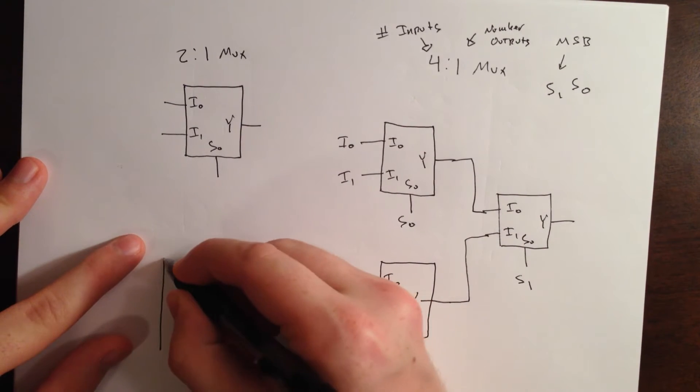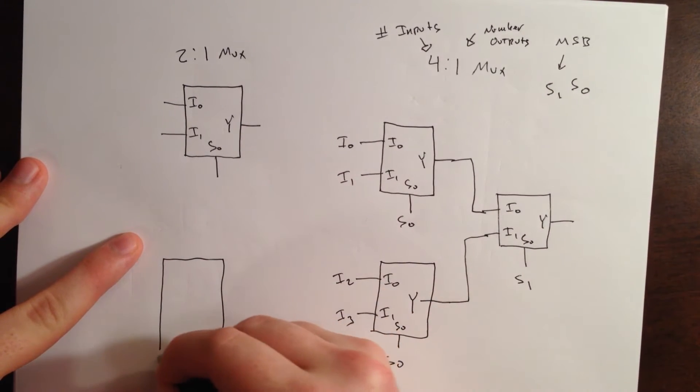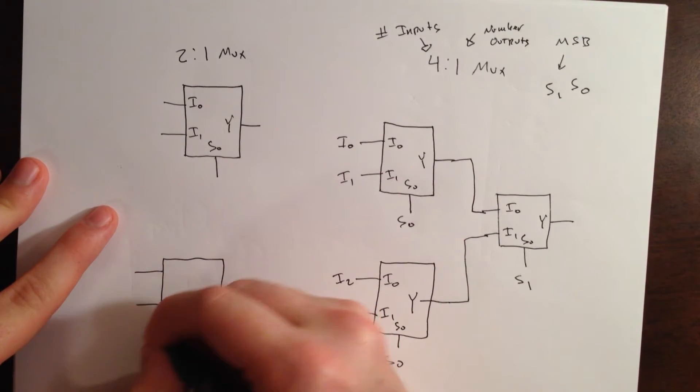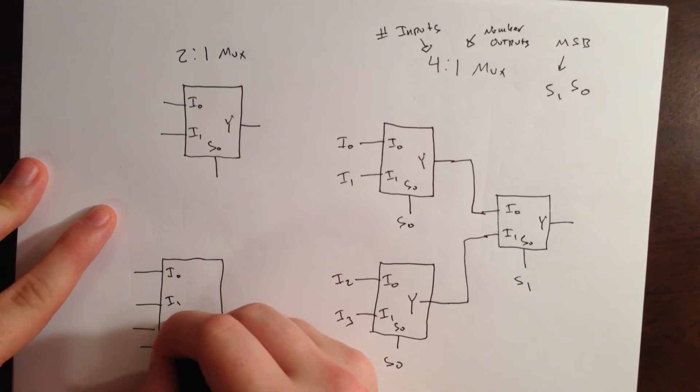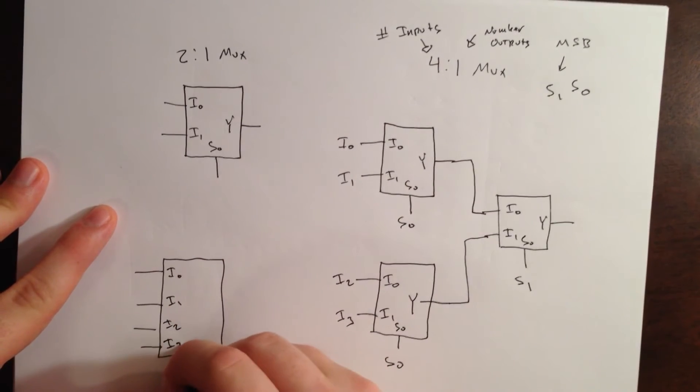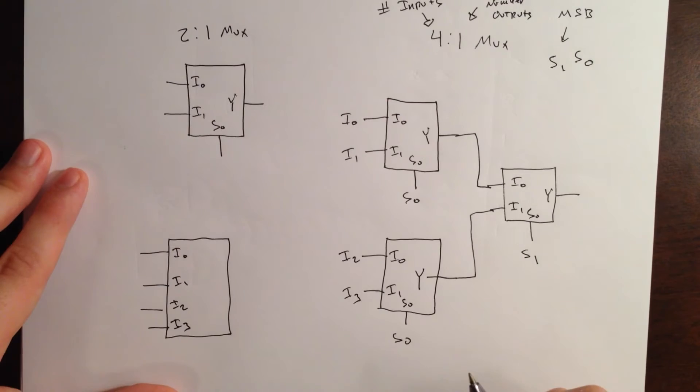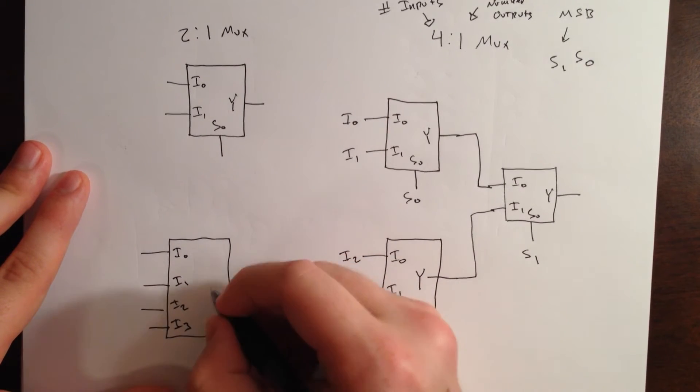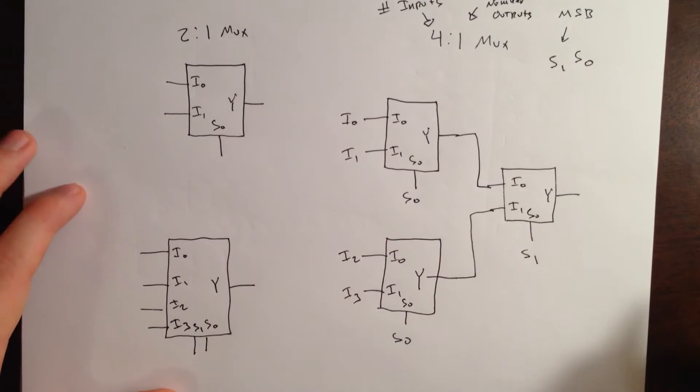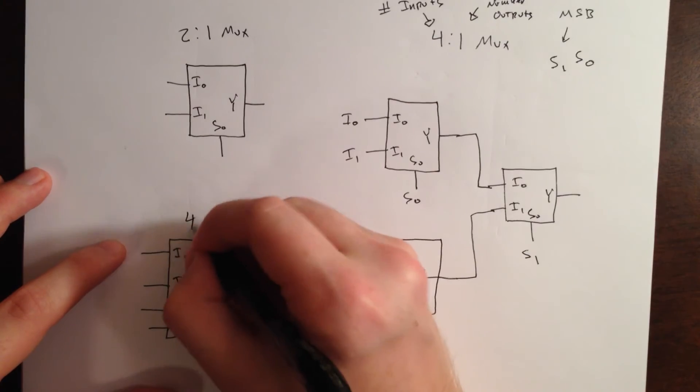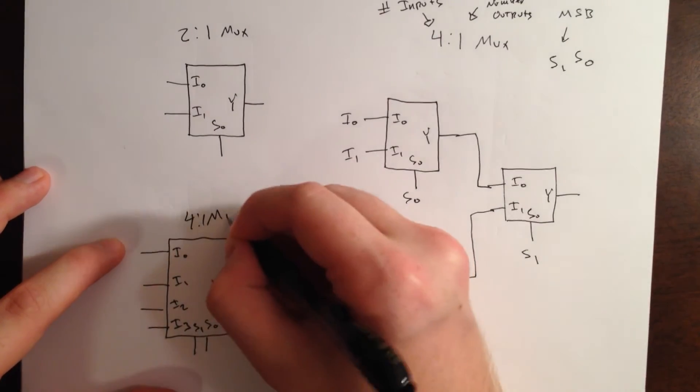And, it will look like this. With our inputs, I0, I1, I2, and I3. And, our output, Y. And, our inputs, S1, and S0. So, this is our 4:1 multiplexor.